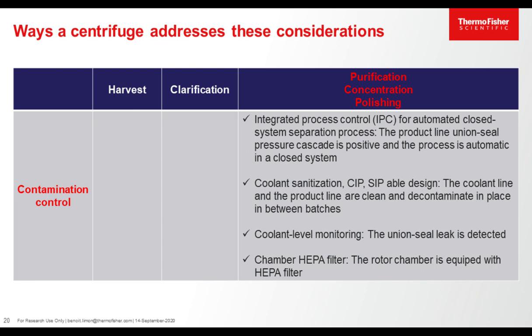When performing purification, concentration, and polishing steps to control contamination, please consider the following: use an integrated process control, which provides an automated closed system process and maintains pressure across the union seat joints to reduce risk of contamination. Use a system capable of coolant sanitization as well as clean-in-place (CIP) and steam-in-place (SIP) to ensure sterile conditions. Use a system with coolant and lubricant fluid level monitoring to detect leaks and stop the process. Use a system equipped with a HEPA filter on the rotor chamber to prevent contaminants from escaping to the environment.